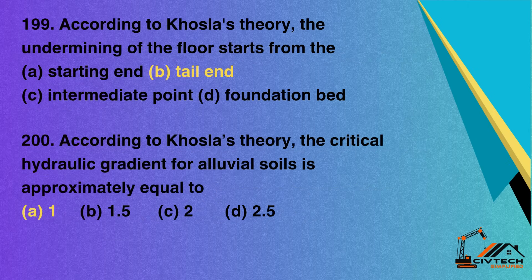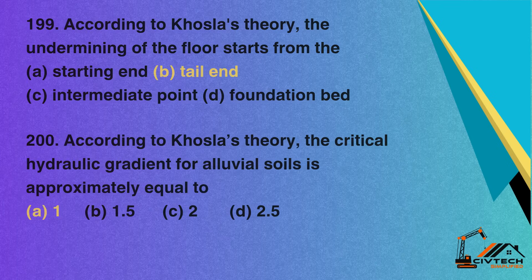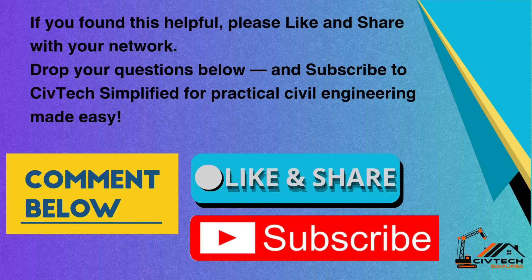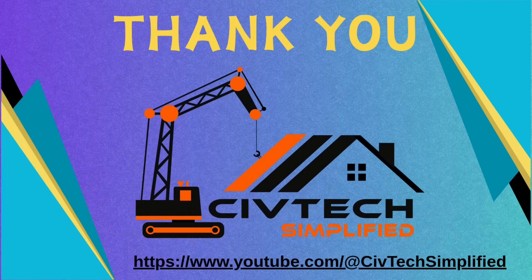Question 199: According to Kostla's theory, the undermining of the floor starts from the — A. Starting end; B. Tail end; C. Intermediate point; D. Foundation bed. Correct option: B. Tail end. Question 200: According to Kostla's theory, the critical hydraulic gradient for alluvial soils is approximately equal to — A. 1; B. 1.5; C. 2; D. 2.5. Correct option: A. 1. If you found this helpful, please like and share with your network. Drop your questions below and subscribe to CivTech Simplified for practical civil engineering made easy. Thank you.